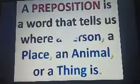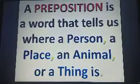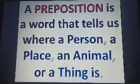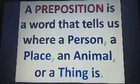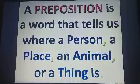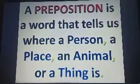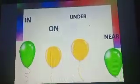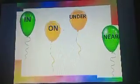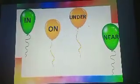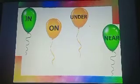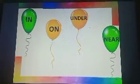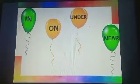A preposition is a word that tells us where a person, a place, an animal, or a thing is. As we saw the ball, it was lying inside the box, then on the table, then under the table, then near the table.